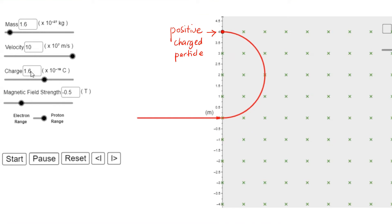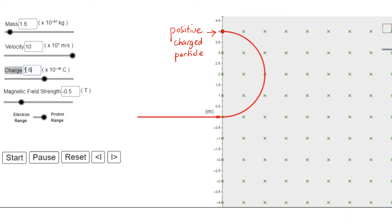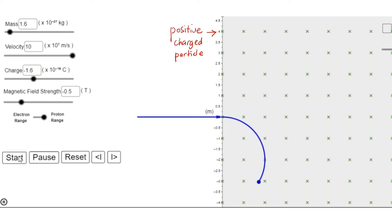We looked at the deflection of the positive charged particle. Where do you think will be the deflection path if the charge is negative? When we make the charge negative, the charge will be deflected downwards due to the magnetic force that is in the opposite direction to that on a positive charge.